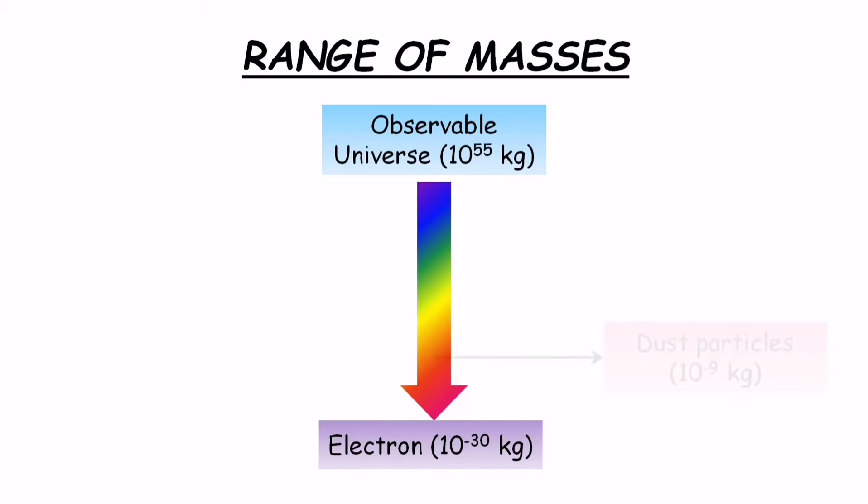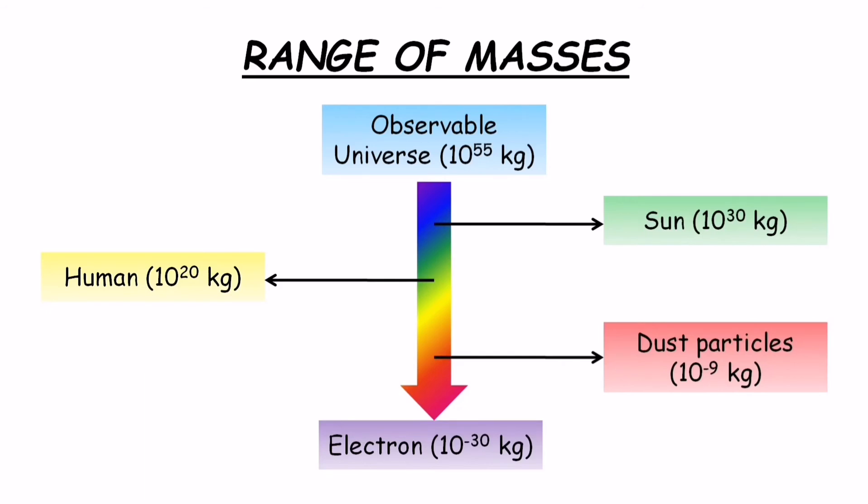And everything in the universe has a mass which lies somewhere in between these two masses. For example, if you see a dust particle, it has a mass of the order of 10^-9 kg. A human being has a mass of order of 100 kg, and the sun has a mass of order of 10^30 kg. So everything lies within this range.